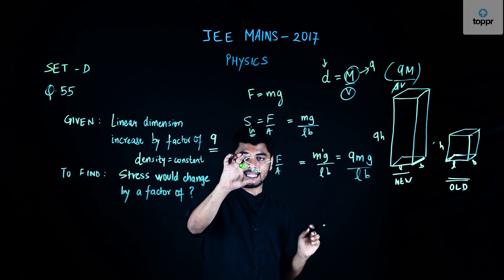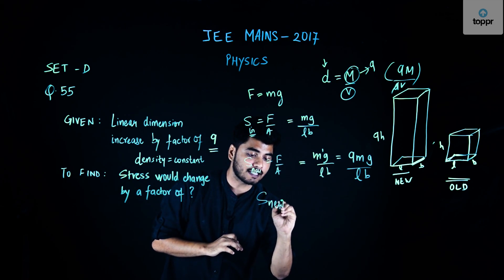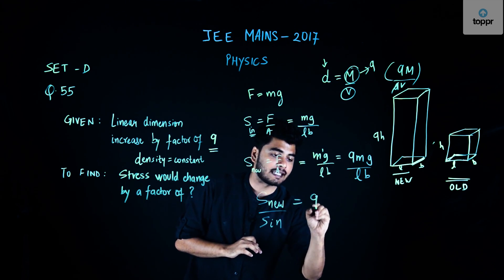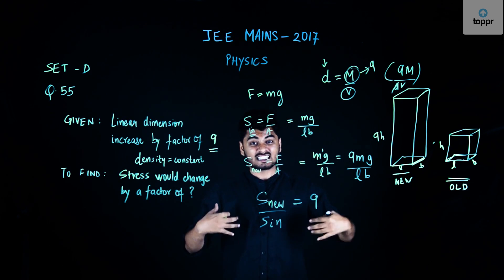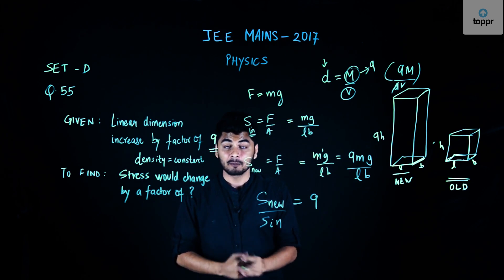So the ratio S_new/S_initial, the factor by which the stress in my legs has increased, clearly equals 9. If I grow into a giant overnight, my stress in my legs would increase by a factor of 9, and that would be very painful.